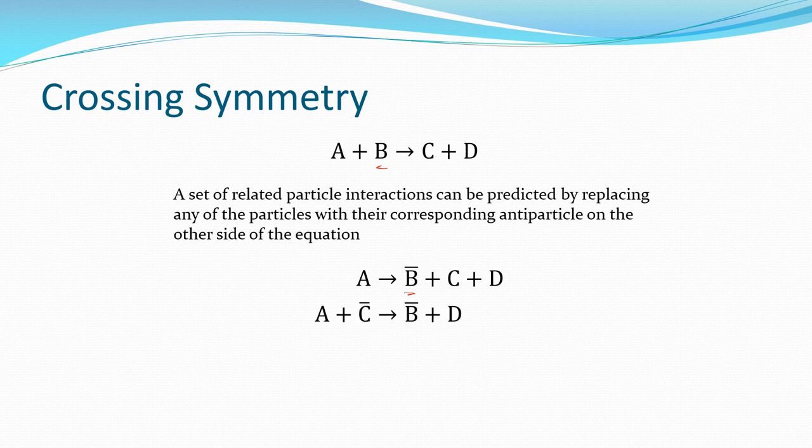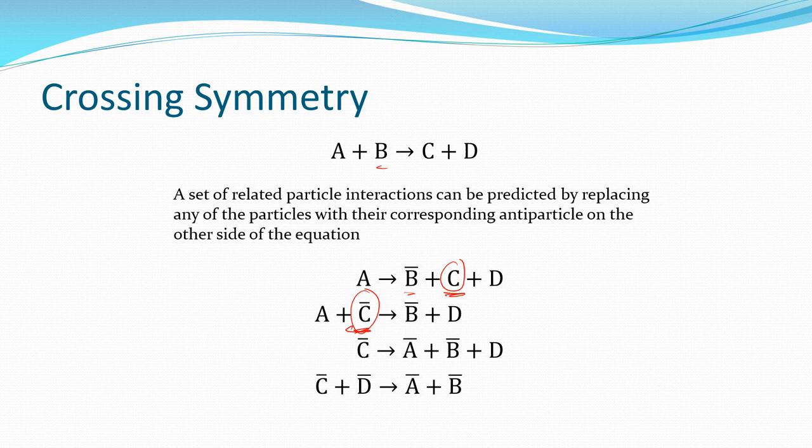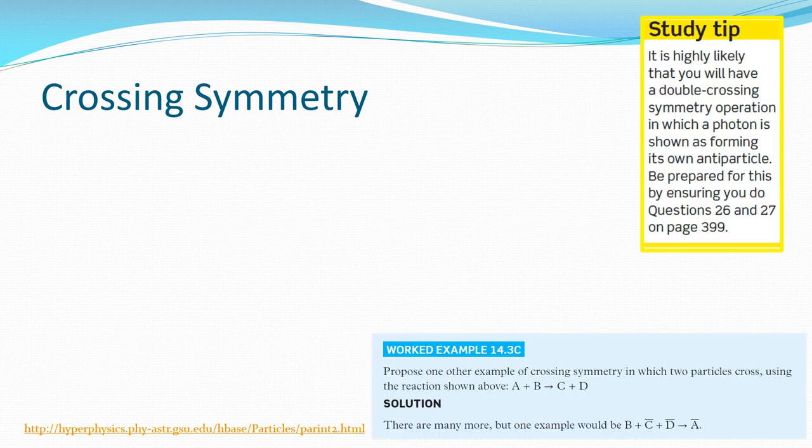So instead of A and B reacting to give us C and D, it's almost like A is breaking down to give us C and D still, but also the anti-B particle. There's another way to look at it. Think of instead of a C particle on the product side, we've got an anti-C on the reactants. So that's an example of what we call crossing symmetry. Same thing there. A and B are now anti-particles. And there's the whole reaction reversed with total anti-particles. There's a little link there if you want to know more about that.